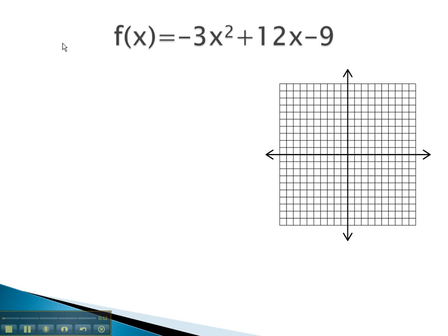The first thing we like to look for is the direction of the graph, which is based on a, or the coefficient of x squared. Because this coefficient is negative, we have a sad parabola opening down.